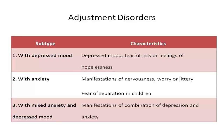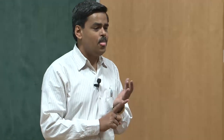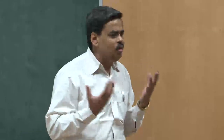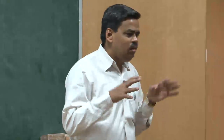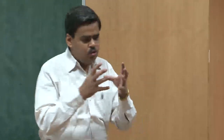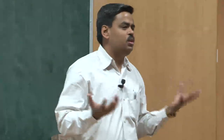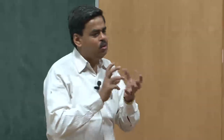The third subtype is 'with mixed anxiety and depressed mood,' where the manifestation is a combination of both. You find yourself in a state of depression and hopelessness, you experience tearfulness, and at the same time you also experience a great degree of worry, nervousness, and jitteriness. If these two sets of symptoms combine, it is considered the third subtype combining both the depressive mood state and the anxiety state.